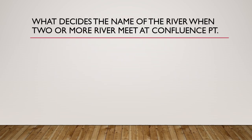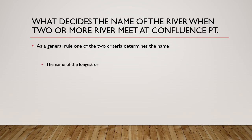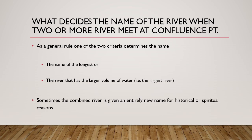As a general rule, two criteria determine the name of a combined river: either the name of the longest river is taken — whichever river is longer at the confluence — or the name of the river which carries the largest volume of water is chosen. Sometimes, because of historical, spiritual, or mythological reasons, the river is given an entirely new name.